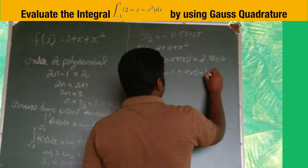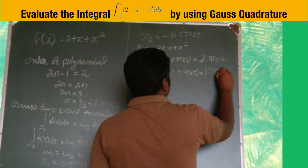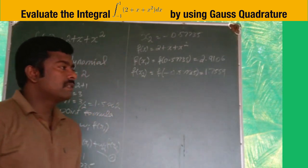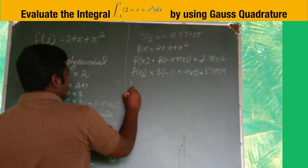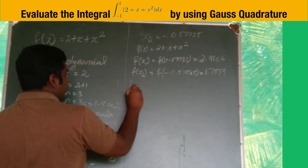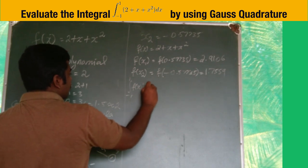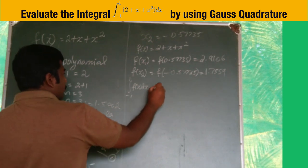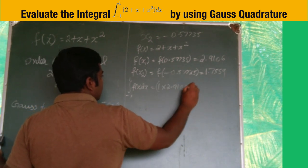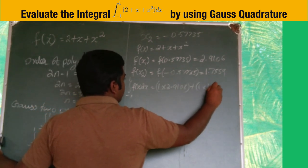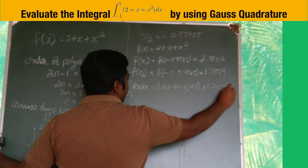Substitute these values in equation 1. You get integral from -1 to 1 of f(x)dx equals w1 times 2.9106 plus w2 times 1.7559.